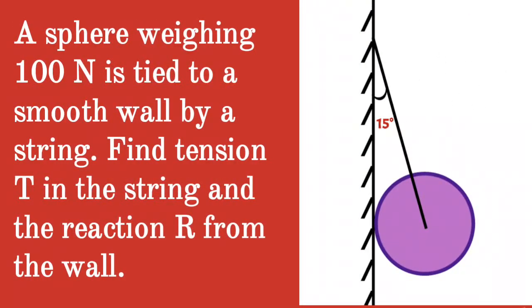Given question: a sphere weighing 100 N is tied to a smooth wall by a string. Find the tension T in the string and the reaction R from the wall.